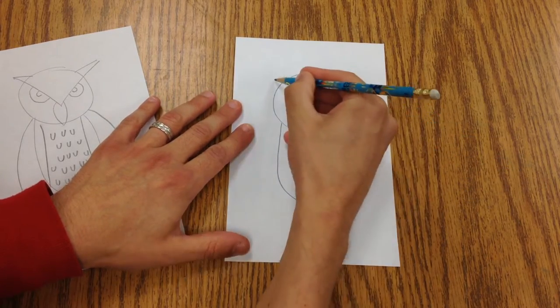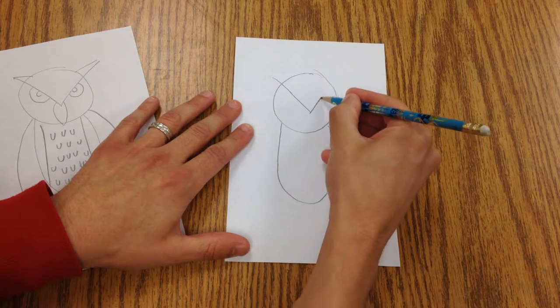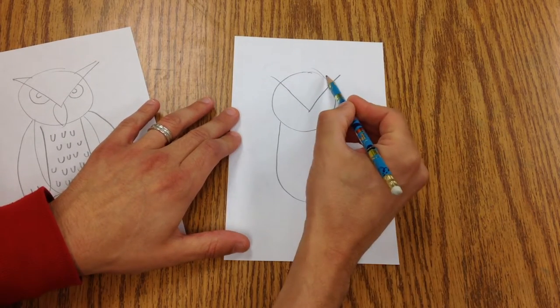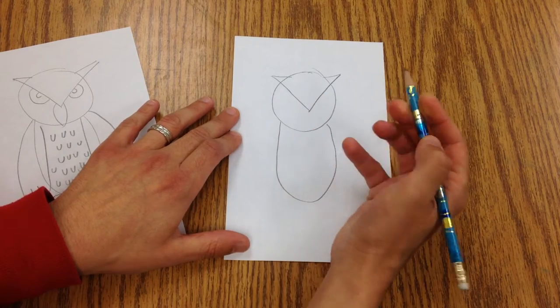Then I'm going to draw a V here and it's going to go past the edges there. Those make those feathers that look like horns.